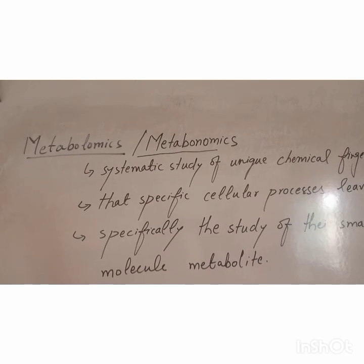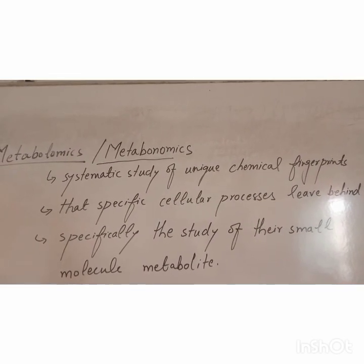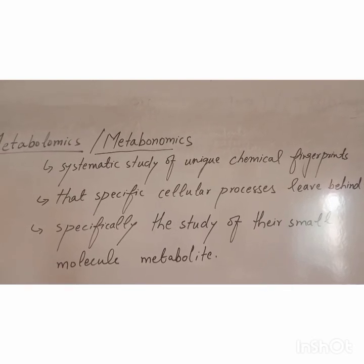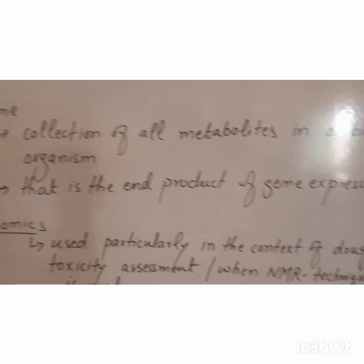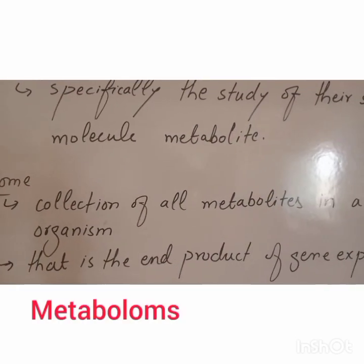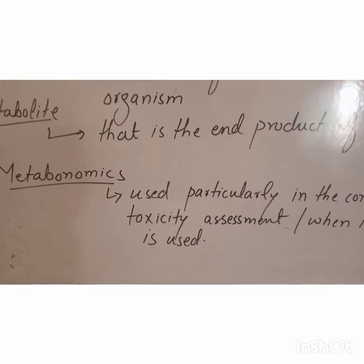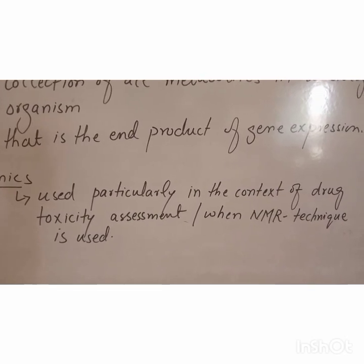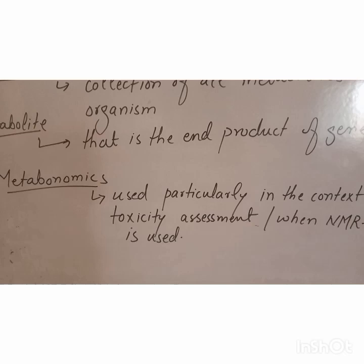Metabolomics is also called metabonomics. Metabolomics is a systematic study of unique chemical fingerprints that specific cellular processes leave behind. It is specifically the study of small molecules called metabolites. Metabolites are the end products of gene expression, and the collection of all metabolites in a biological organism is known as the metabolome. The term metabonomics is used particularly in the context of drug toxicity assessment or when NMR technique is used, but most commonly metabolomics is used.